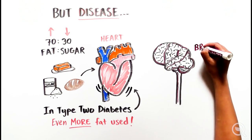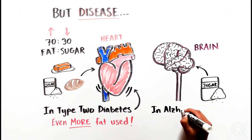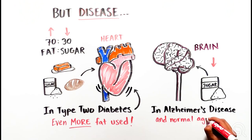The healthy brain runs almost entirely on sugar, but in Alzheimer's disease, the brain's ability to use sugar goes down. Research is underway to figure out exactly why this is.